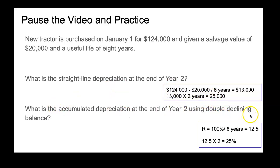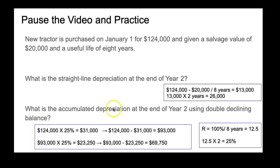For double declining balance: R equals 100% divided by 8 years equals 12.5%. Times 2 for DDB gives 25%. Year one: 25% of $124,000 equals $31,000. Book value becomes $93,000. Year two: 25% of $93,000 equals $23,250. Accumulated depreciation at end of year two is $31,000 plus $23,250 equals $54,250. The book value at end of year two is $69,750, which carries forward to year three.